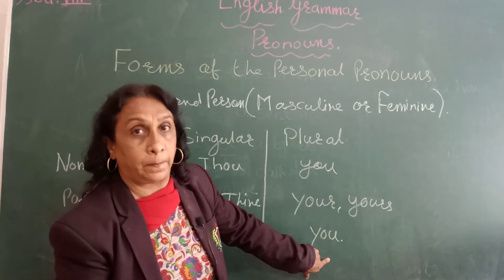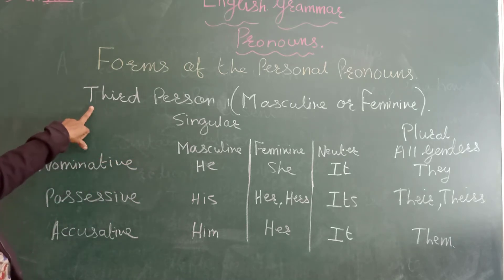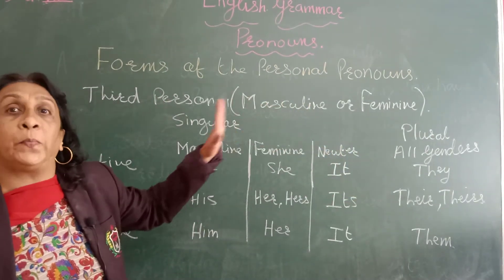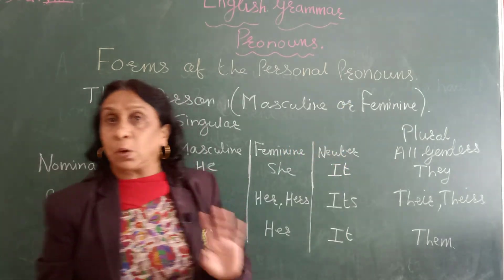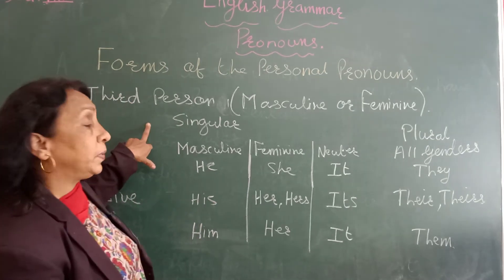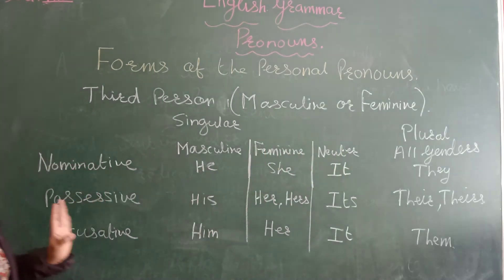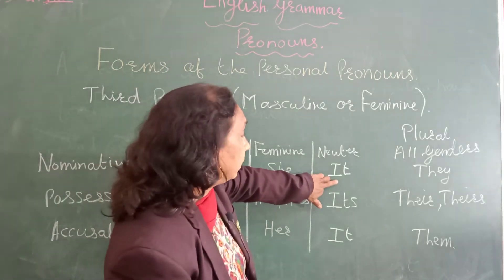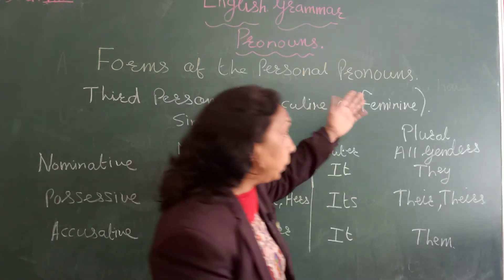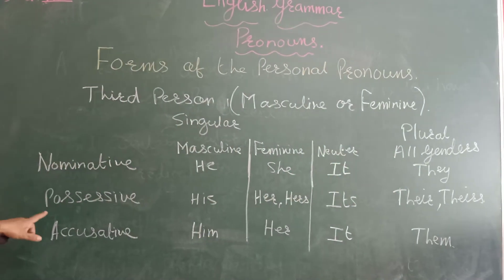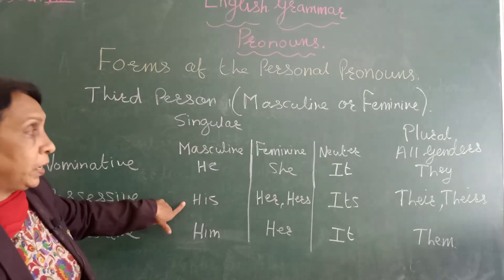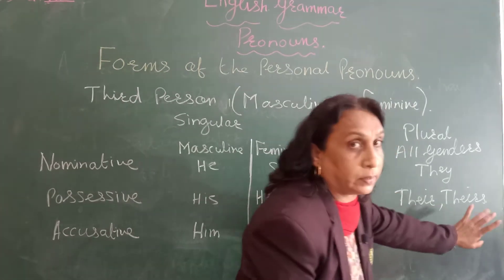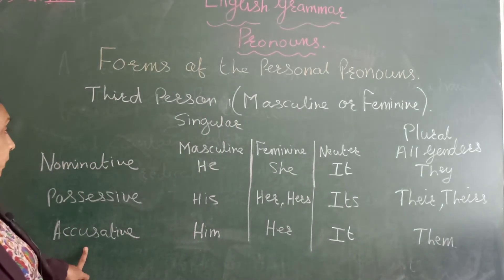We use 'you' for plural in the accusative. Now, in the third person pronoun, we have three genders: masculine, feminine, and neuter. Masculine means boy or male, feminine means girl or female, and neuter means it is a common gender. For the nominative case — masculine we use 'he', feminine 'she', neuter 'it' in singular, and in plural for all genders we use 'they'. In the possessive, for masculine we use 'his', feminine 'her' or 'hers', neuter 'its', and plural 'their' or 'theirs'.